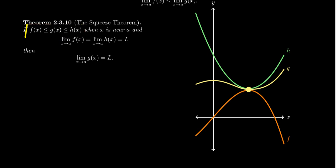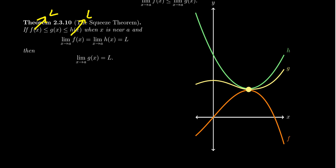We also have the following: the limit as x approaches a of f(x) is some number L, and likewise the limit as x approaches a of h(x) is also L. So when you look at the squeeze, the limit of f goes toward L and the limit of h also goes toward L. By the previous statement about inequalities, the limit of g(x) must be greater than or equal to L and less than or equal to L. Since L is the same number, the only possibility is that the limit of g(x) is L itself. So if g is squeezed between two functions whose limits both equal L, then the limit as x approaches a of g(x) must likewise be L.